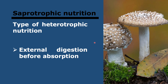We also have saprotrophic nutrition, another type of heterotrophic nutrition. Some fungi and bacteria are saprotrophs, meaning they do digestion outside of the body — they secrete digestive enzymes into organic matter, digest it externally, and then absorb the products of digestion. These are also known as decomposers. Interestingly, spiders also do saprotrophic nutrition.